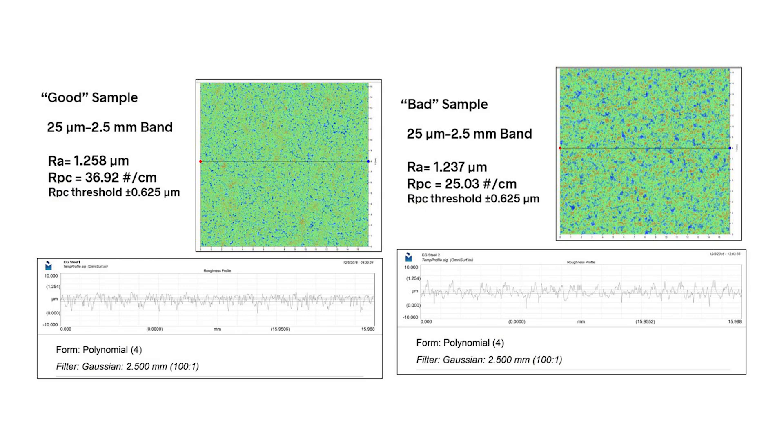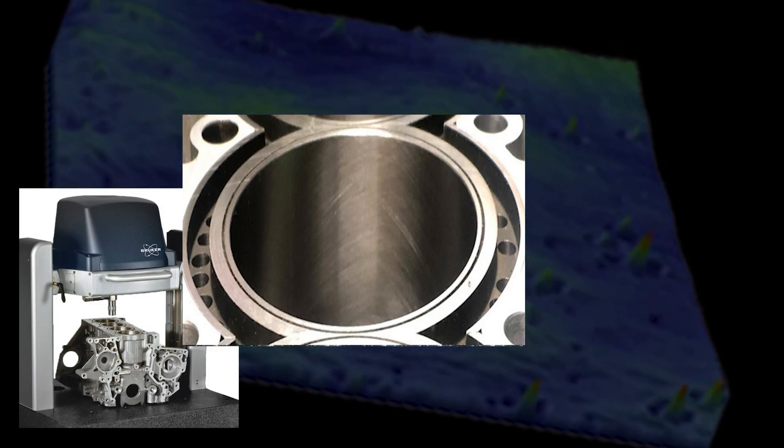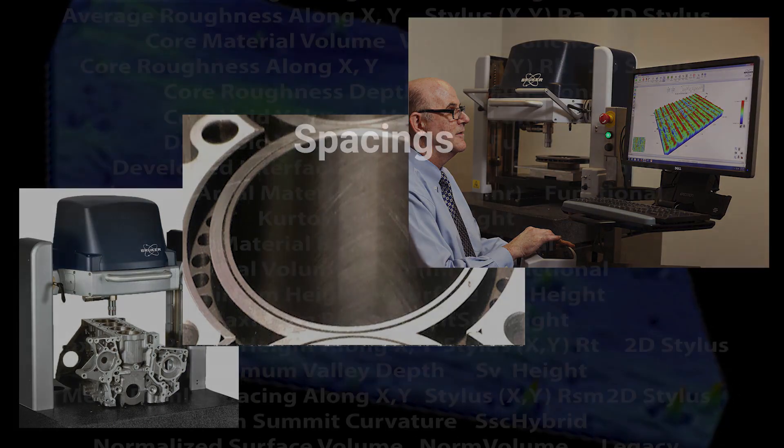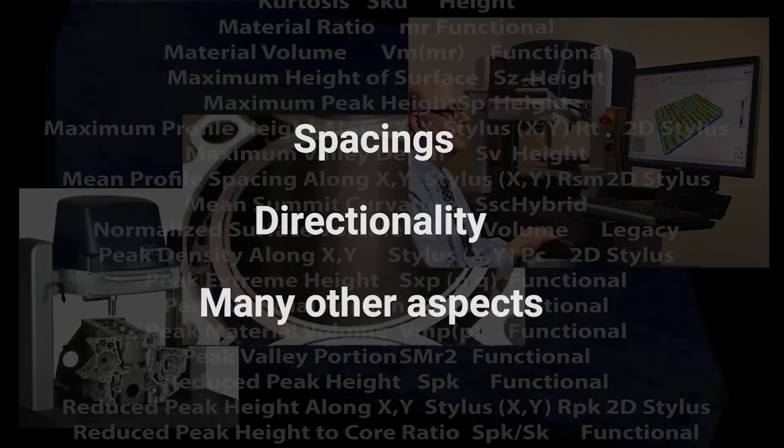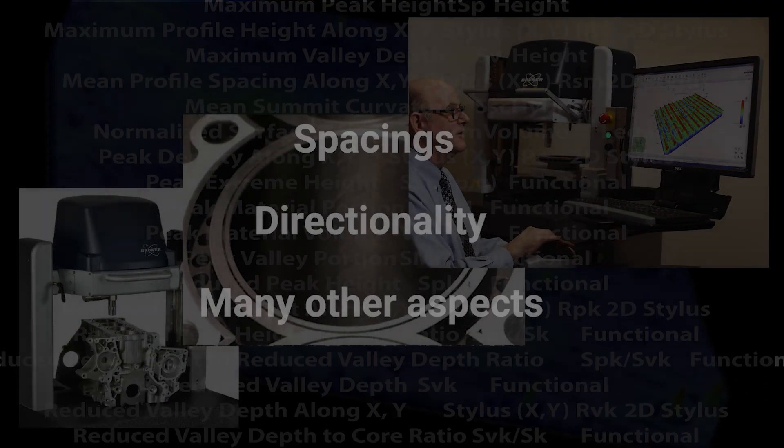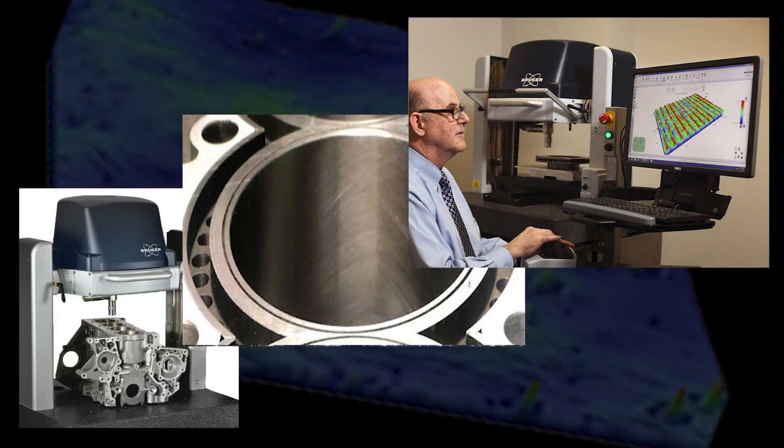The basic projects I do really break down into two applications. One is just quantifying texture where people are developing a part, they want to get the surface texture right, and we'll look and measure the surface texture. We have a whole number of different surface texture parameters and techniques we can use to ascertain what is about that surface texture that might be affecting say blood clotting or fluid leaking.